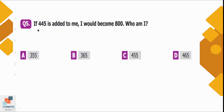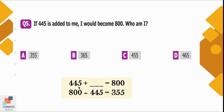Question number 5: If 445 is added to me, I would become 800. Who am I? The equation can be written as 445 plus what equals 800. Since a part of the equation is missing, we use the inverse of addition, which is subtraction. So 800 minus 445 is equal to 355. Option A is the correct option. If we add 445 and 355, the answer is 800.